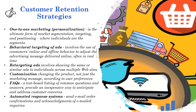One-to-one marketing, or personalization, is the ultimate form of market segmentation, targeting, and positioning where individuals are segmented. Behavioral targeting of ads involves the use of consumers' online and offline behavior to adjust the advertising message delivered online, often in real time. Retargeting ads involves showing the same or similar ads to individuals across multiple websites. Customization means changing the product, not just the marketing message, according to user preferences.